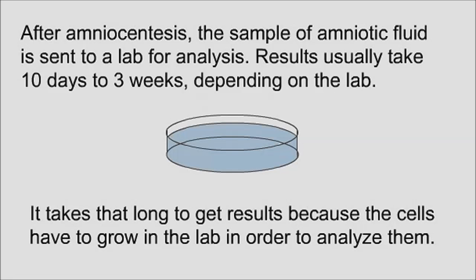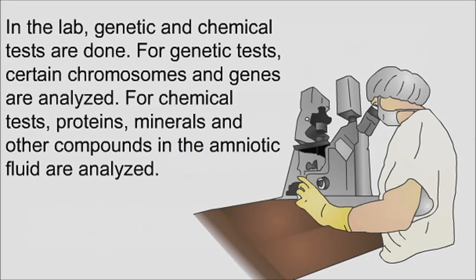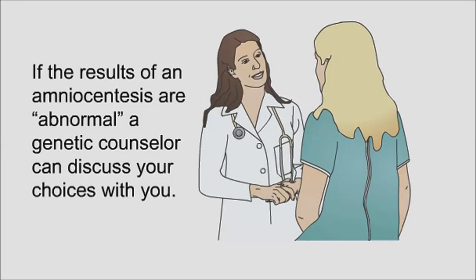After amniocentesis, the sample of amniotic fluid is sent to a lab for analysis. Results usually take ten days to three weeks depending on the lab, because the cells have to grow in the lab in order to analyze them. Genetic tests analyze certain chromosomes and genes, while chemical tests analyze proteins, minerals, and other compounds in the amniotic fluid. If the results are abnormal, a genetic counselor can discuss your choices with you.